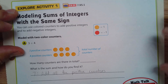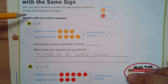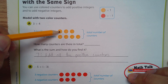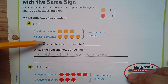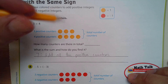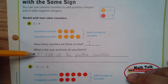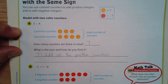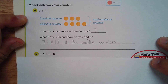We have the simple idea of three plus four. We know three plus four equals seven. If we model that with three positives and four other positives, the total number of counters is seven. So the sum is seven — you just add all the positive counters.